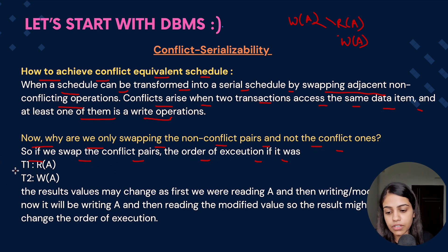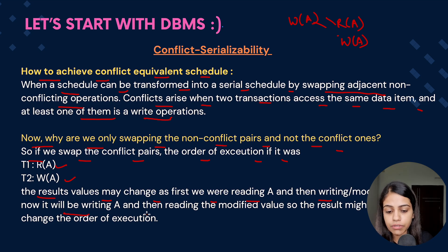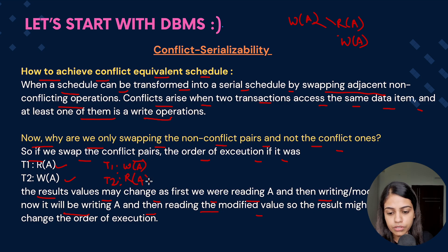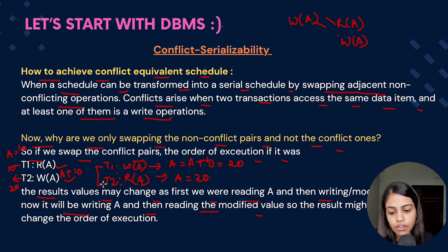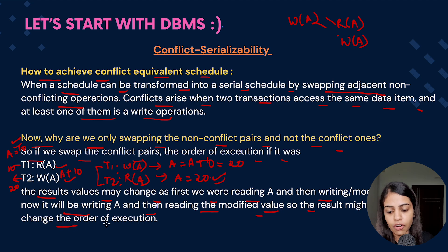Why do we only swap non-conflict pairs and not the conflict ones? If we swap conflict pairs, the order of execution changes — for example, if it was read-A then write-A, first we were reading A then modifying it, but after swapping it will be write-A then read-A, reading the modified value. If the value of A was 10 before swapping, reading gives 10 and writing gives 20. After swapping, writing gives 20 and reading gives 20 — so the read value changes from 10 to 20, causing data inconsistency.